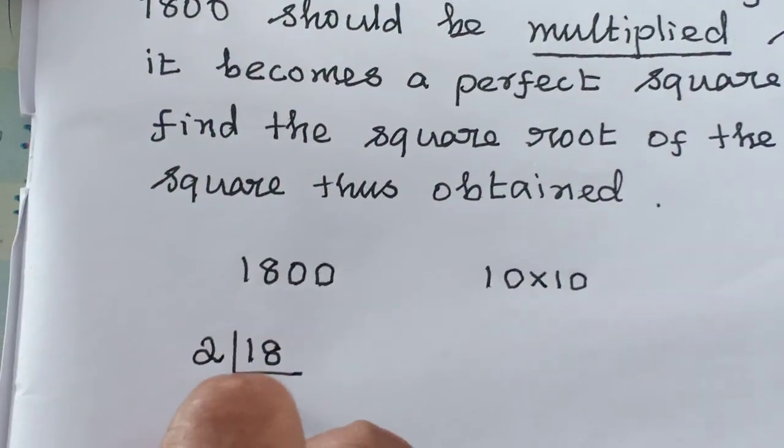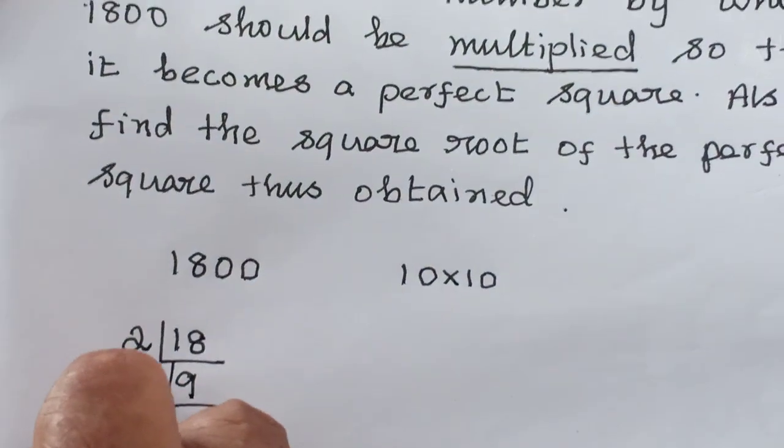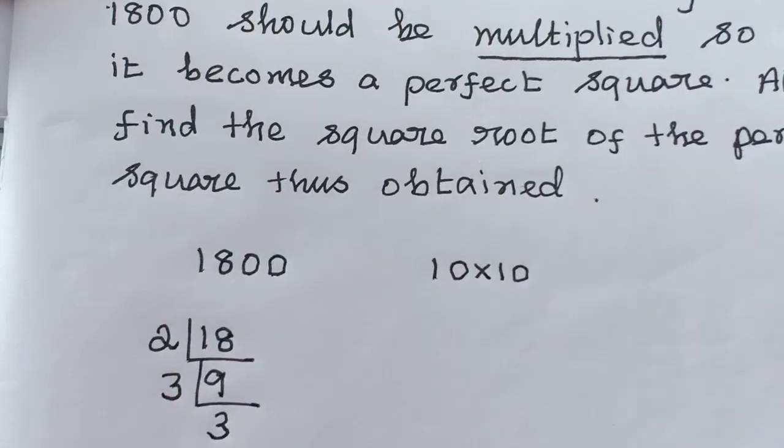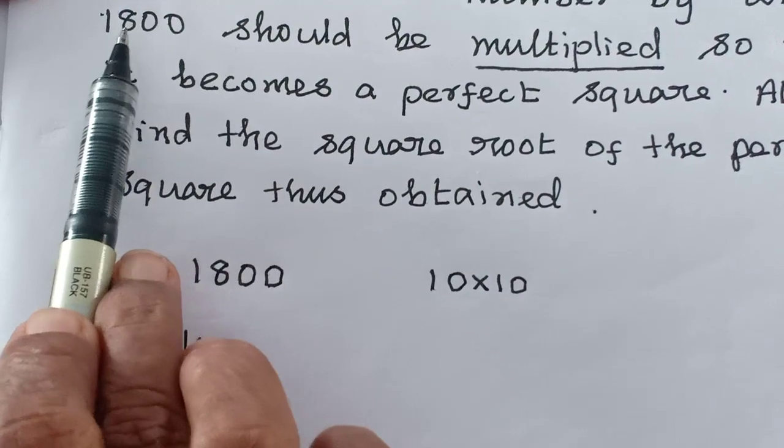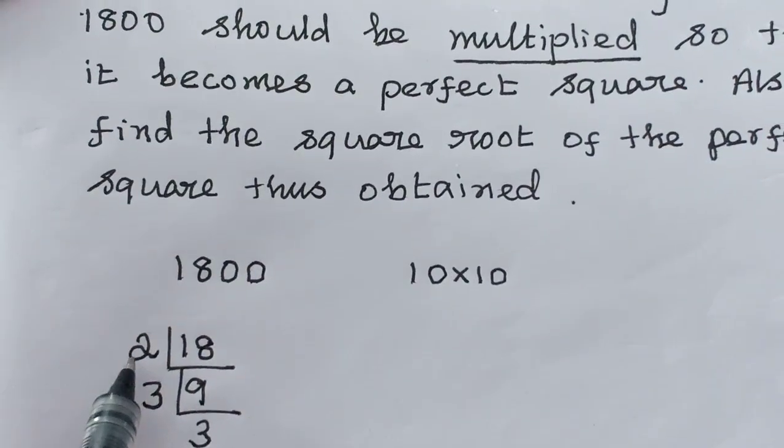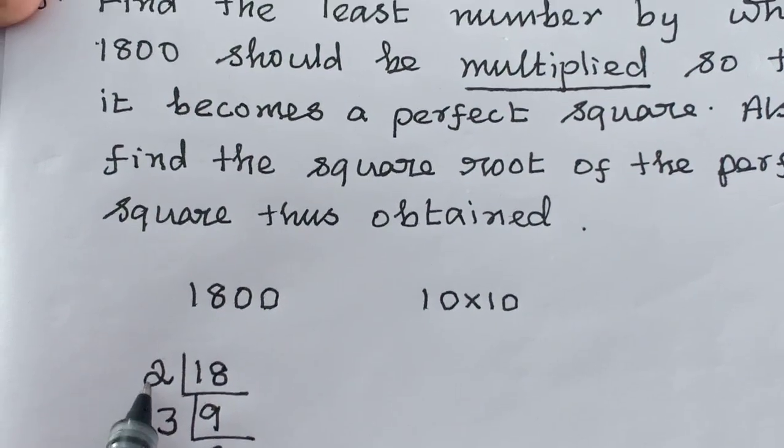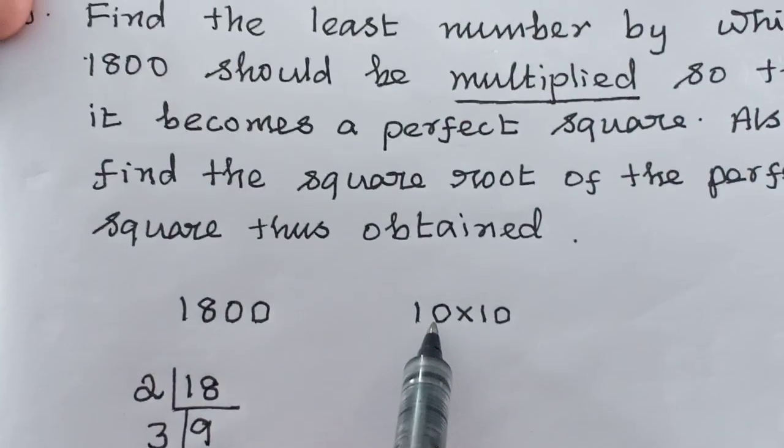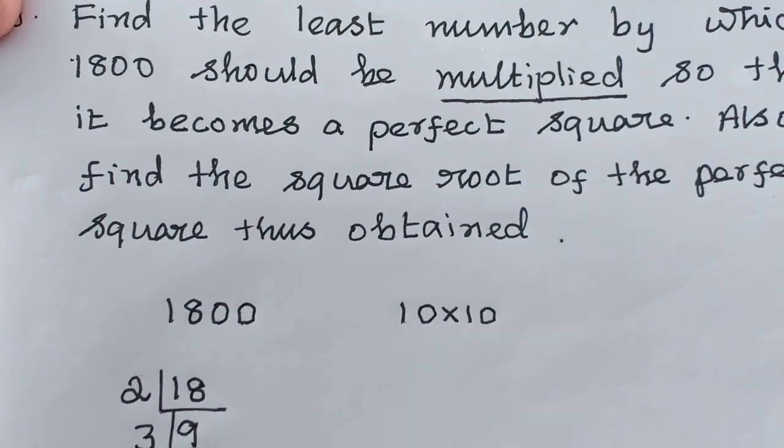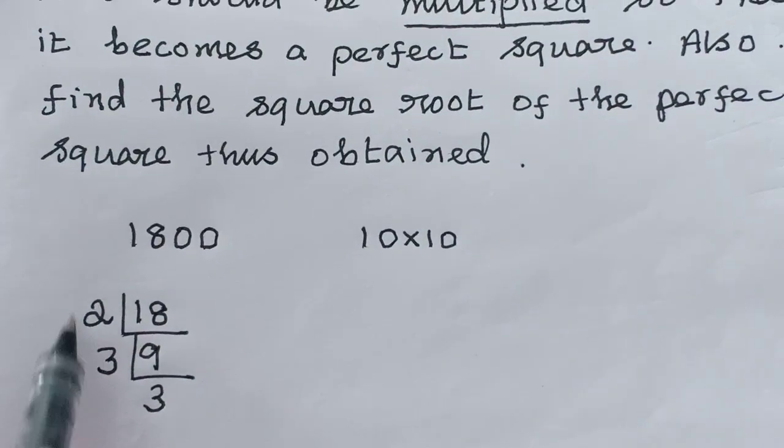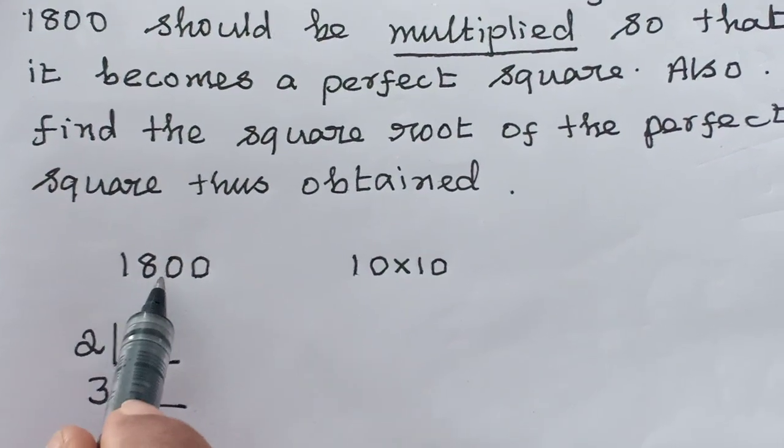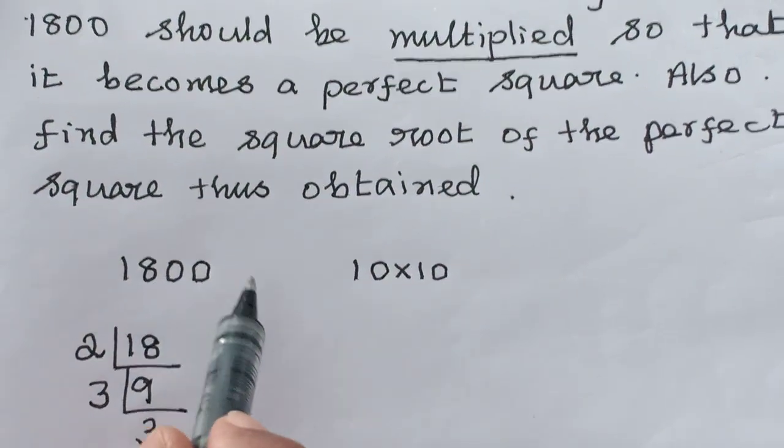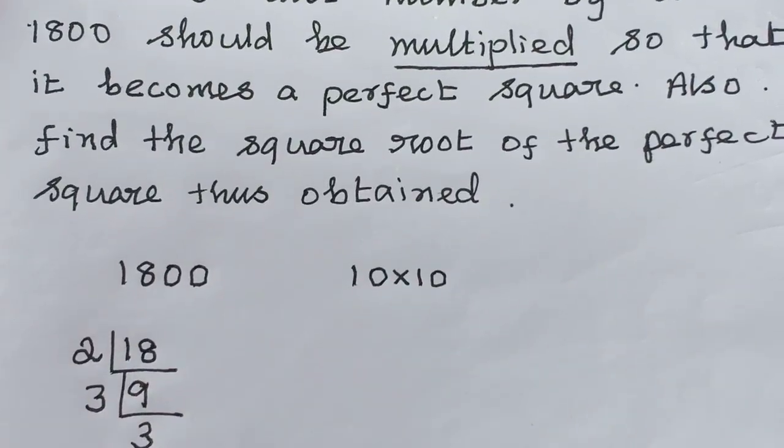9 2's are 18. Next is what? 3 3's are 9. So 1800 should be multiplied by 2. Because 2 does not have a pair. 10 also it has a pair. 3 also it has a pair. 2 only it does not have a pair. So 1800 should be multiplied by 2. This is one way of doing.